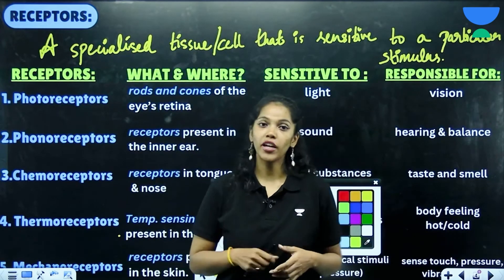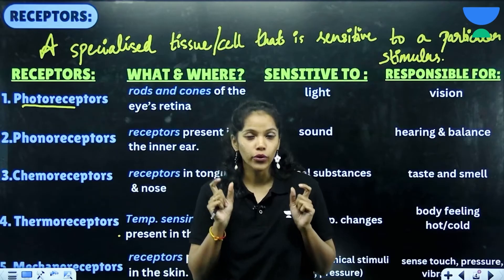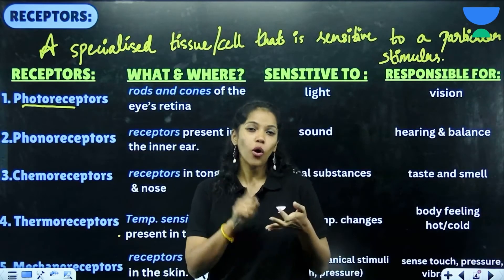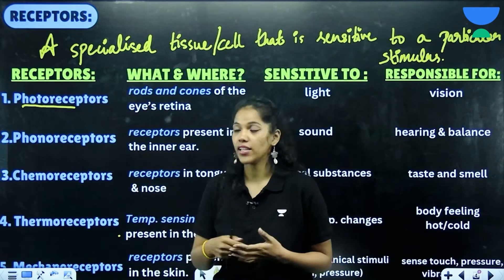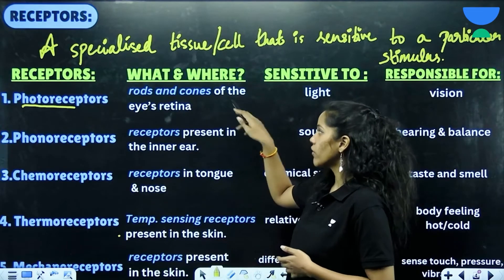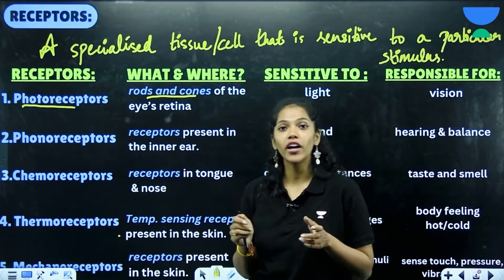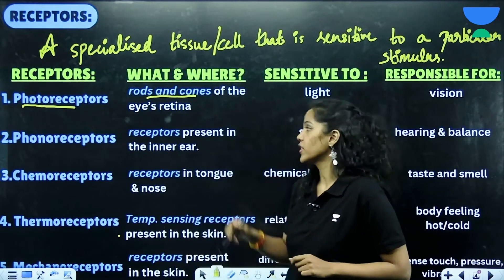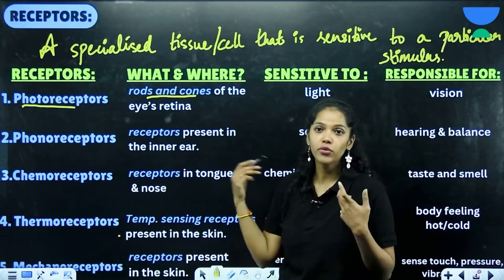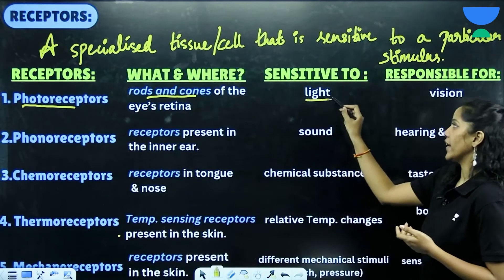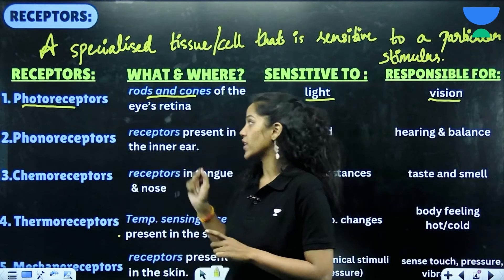The first receptor is the photoreceptor. Whenever you hear the word 'photo', always associate it with sight, vision, or your eyes — that way it's easier to remember. Photoreceptors are the rods and cones of the eye's retina — specialized cells present within the retina. They are sensitive to light and responsible for vision.